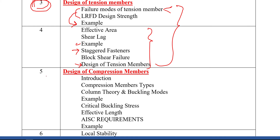After tension members, we move to compression members. We'll cover an introduction, different types of compression members, column theory and buckling modes — which are very important for insight into column behavior — then apply an example. We'll also discuss the critical buckling stress, which is a major criterion controlling column design, the effective length calculation, AISC requirements for compression members, and apply it all on an example.